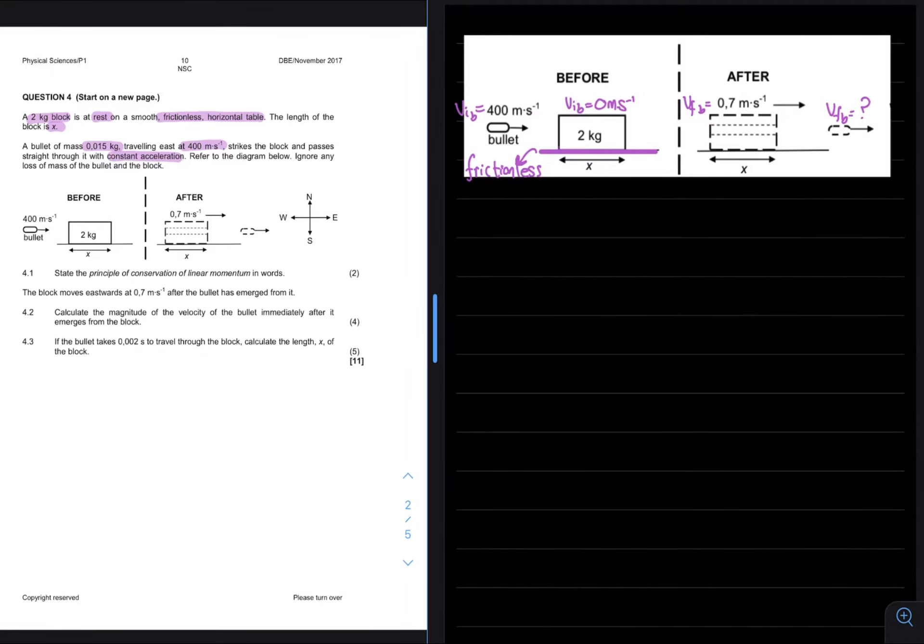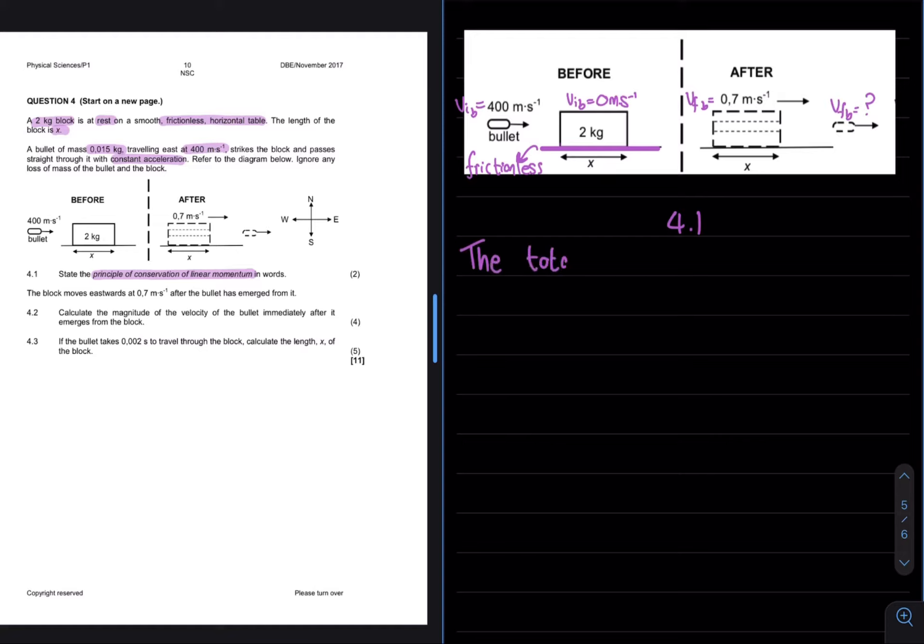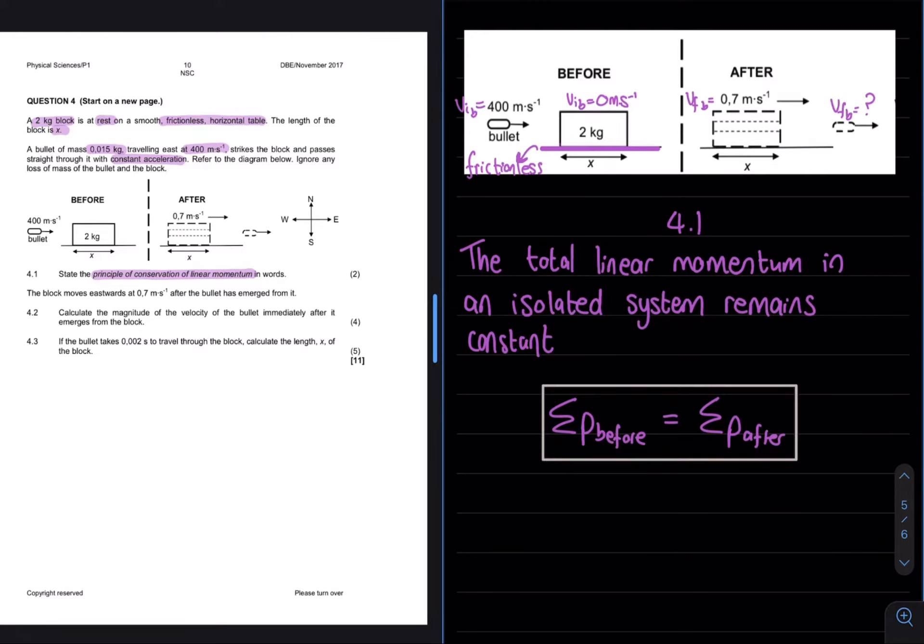Question 4.1 then says, State the principle of conservation of linear momentum in words. The principle of conservation of linear momentum tells us that the total momentum before a collision needs to equal the total momentum after the collision.